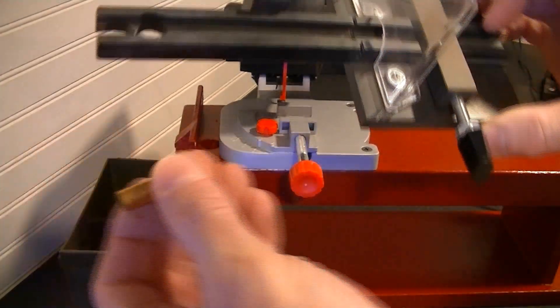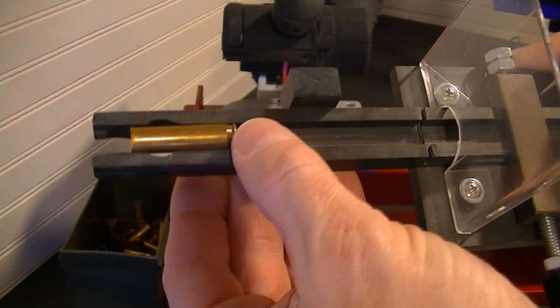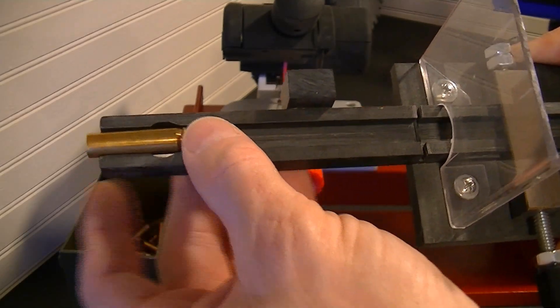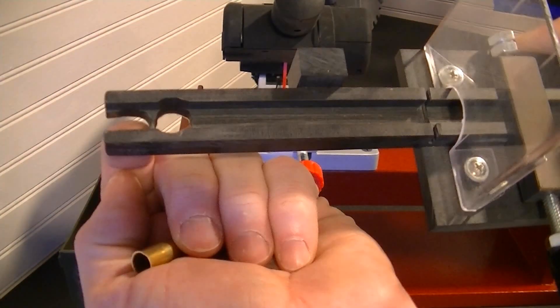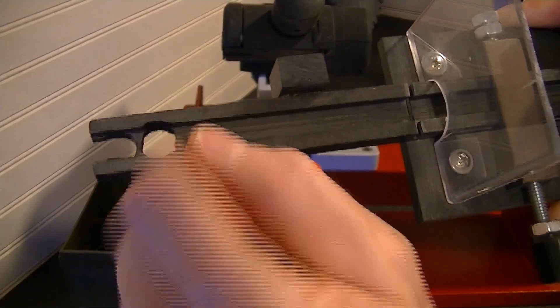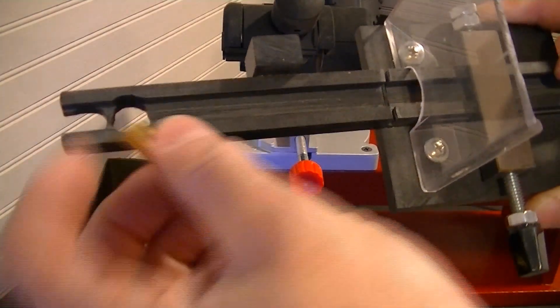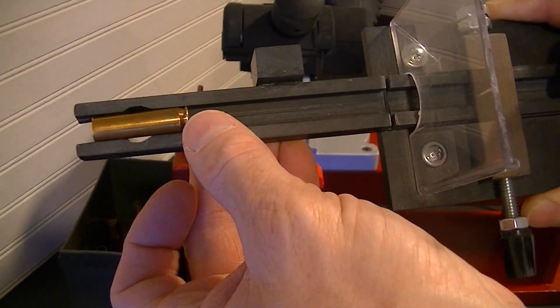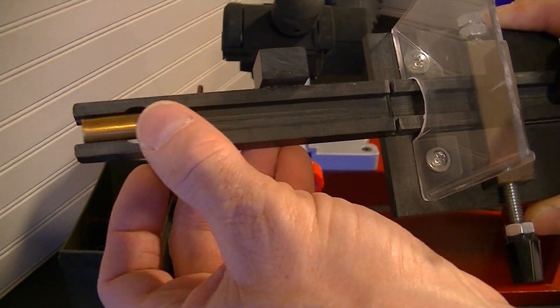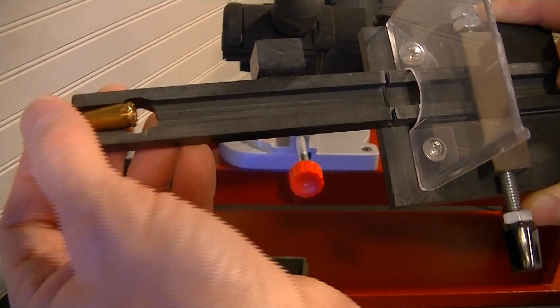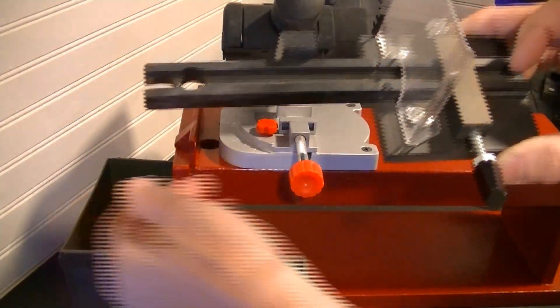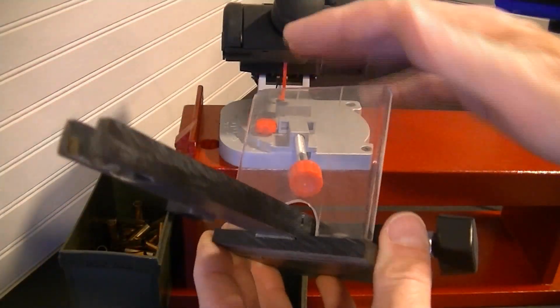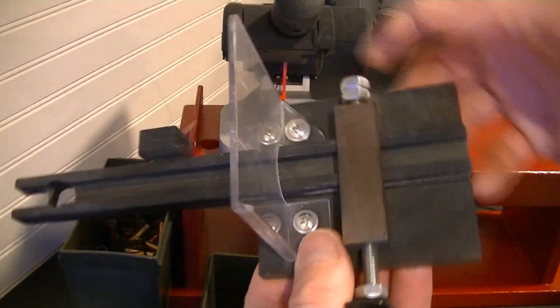And again, this little feature right here, this little ridge, that's what the shell rides against—or the case, rather, rides against—and then it needs to be able to drop off the end. Another, just similar guard, this one's just screwed in.